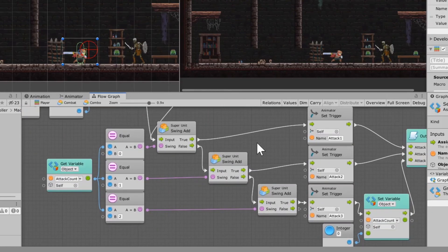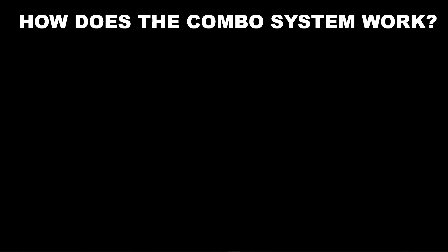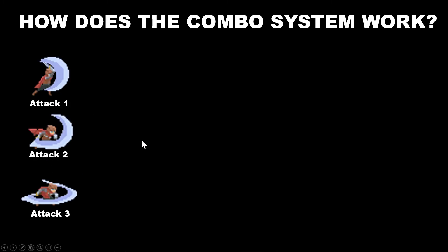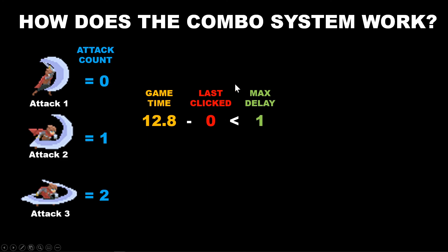I know this is already running long but I don't want you to leave without understanding how this combo system works. You have three attacks: attack one, attack two, attack three. I had you set up a variable called attack count set to zero. In the game logic, attack one equals zero, attack two equals one, and attack three equals two — that's the way lists work. I also had you set up two variables: 'last click,' which is a scene variable set to zero when you enter combat mode, and 'max delay' of one second. The game time starts counting up from when you start the game — that's basically how game systems work.